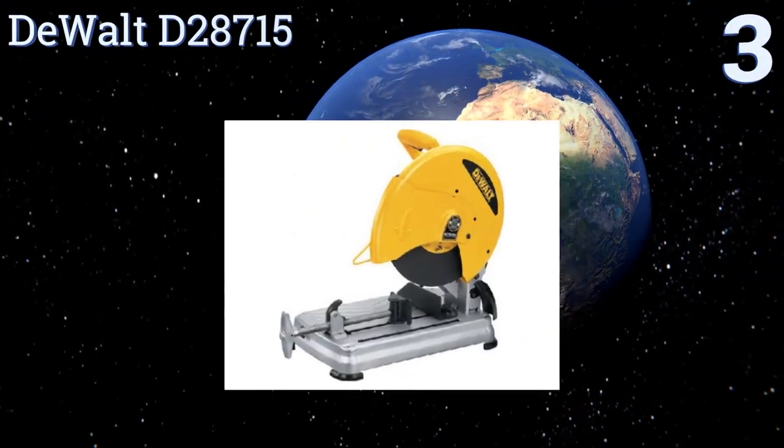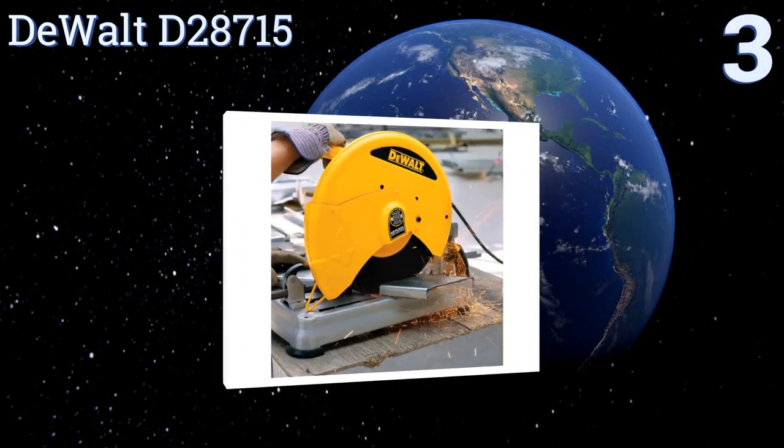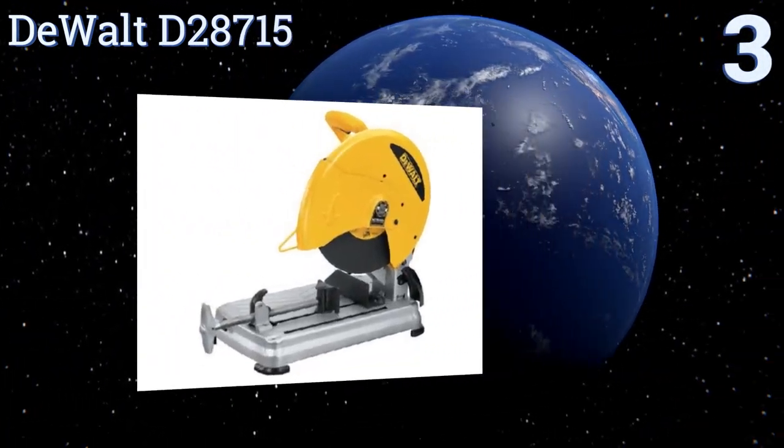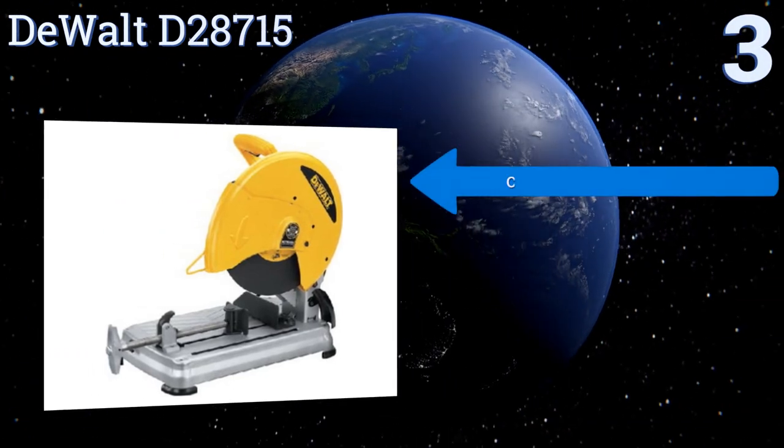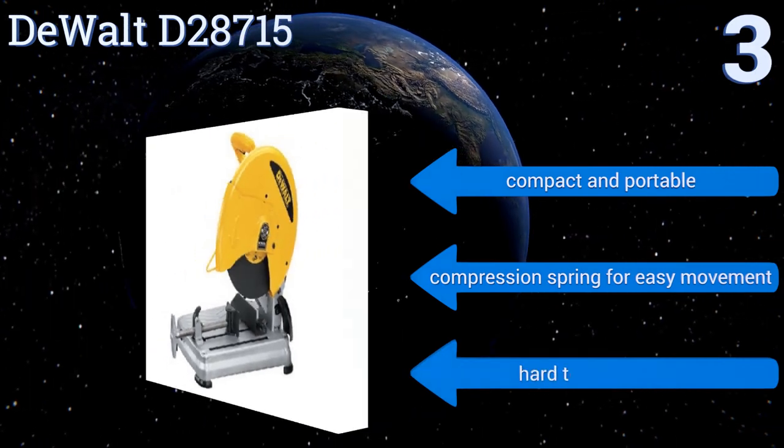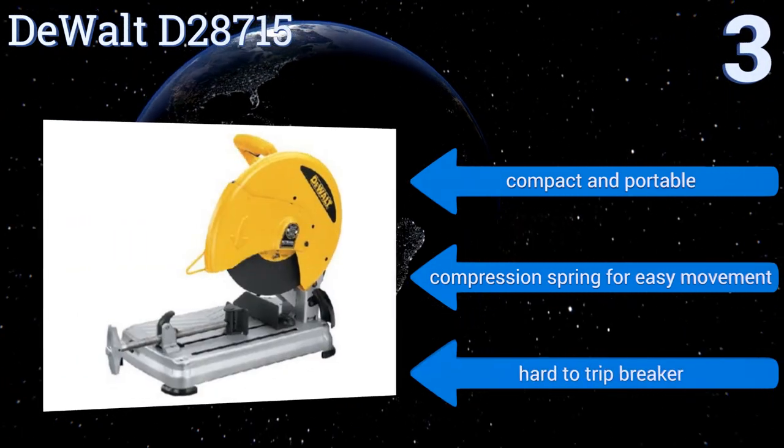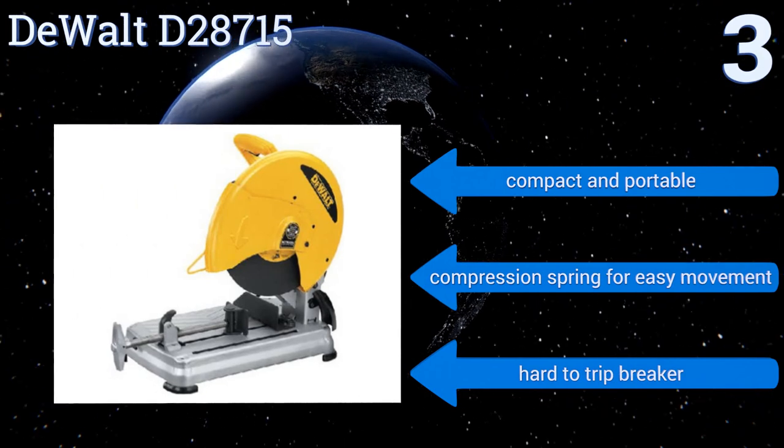Nearing the top of our list at number three, the DeWalt D28715 is one of the only models that allows for tool-free blade changes, saving you lots of time when you need a different wheel. It has a quick-lock vise to easily and securely clamp your material down without worrying about it slipping. It's compact and portable with compression springs for easy movement and a hard-to-trip breaker.